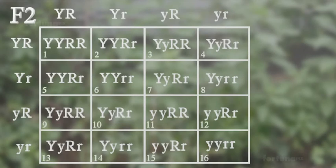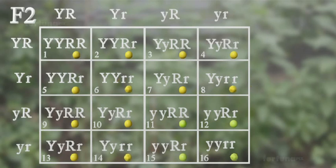In the sixteen possible combinations, nine plants will be yellow with round seeds, three will be green with round seeds, three will be yellow and wrinkled, and one will be green and wrinkled.